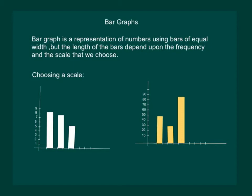While for some other bar graph, one unit may represent 10 observations. That means that depending on the data, the scale has to be chosen and the scale also alters the length of the bar.